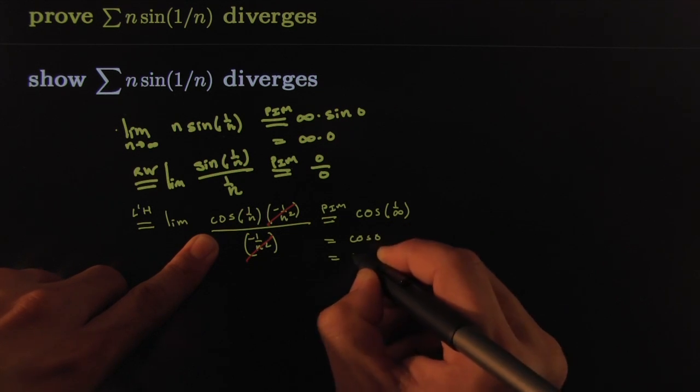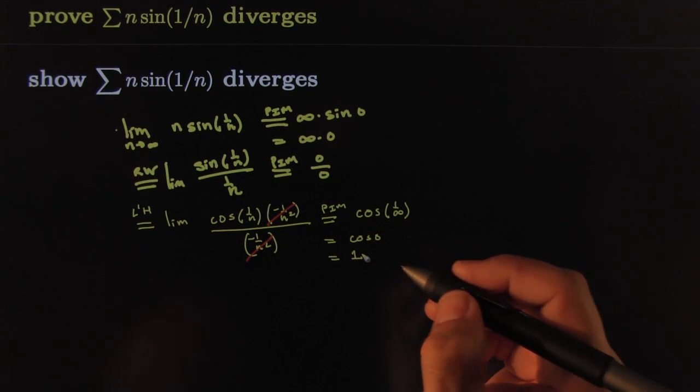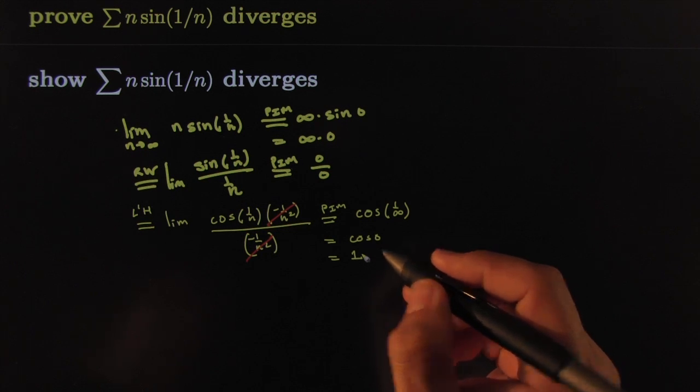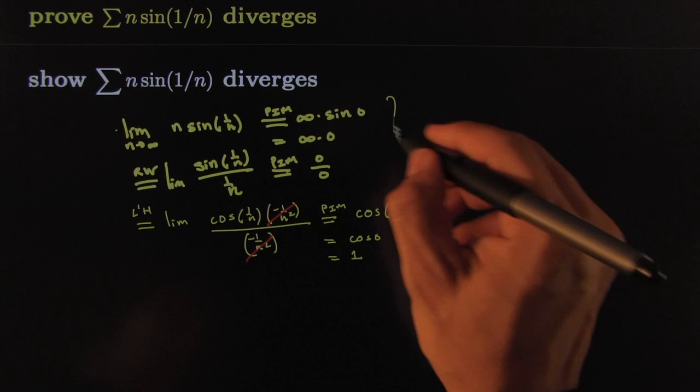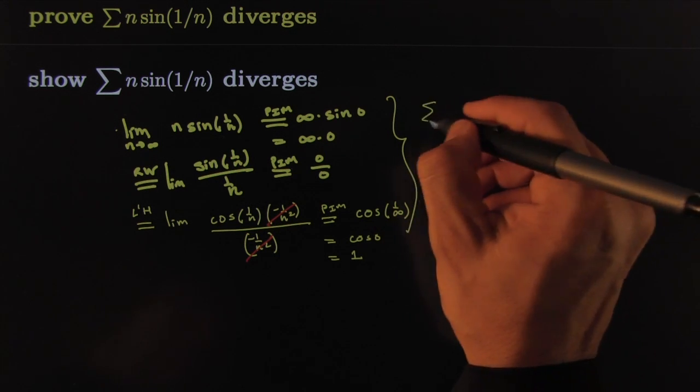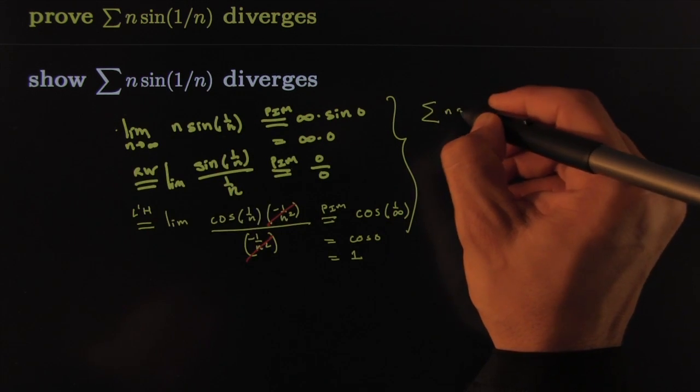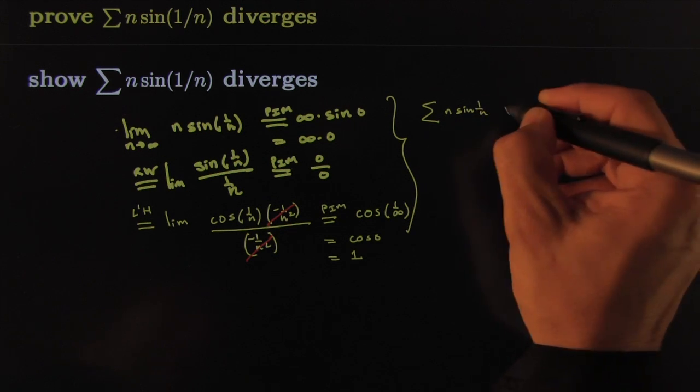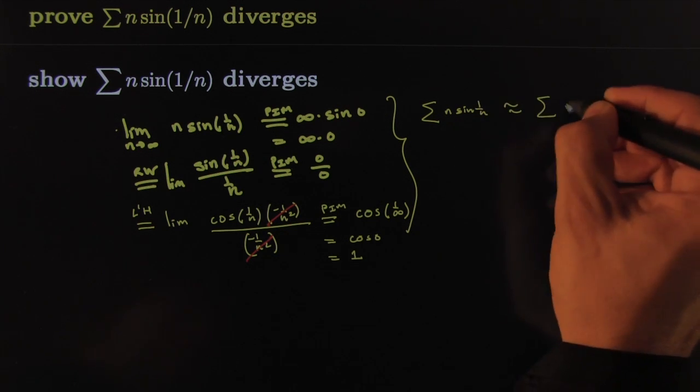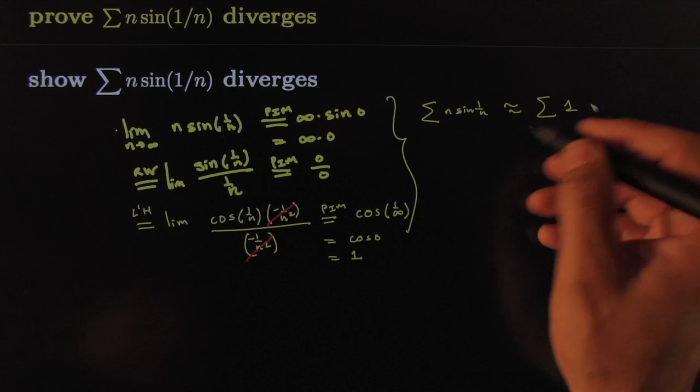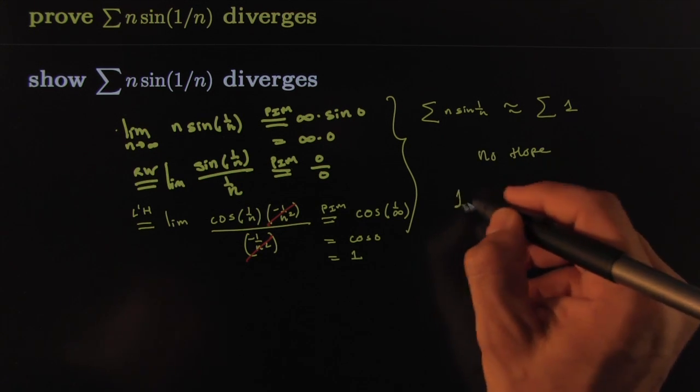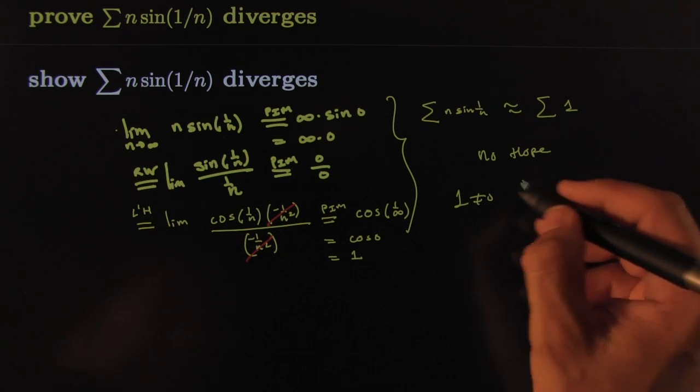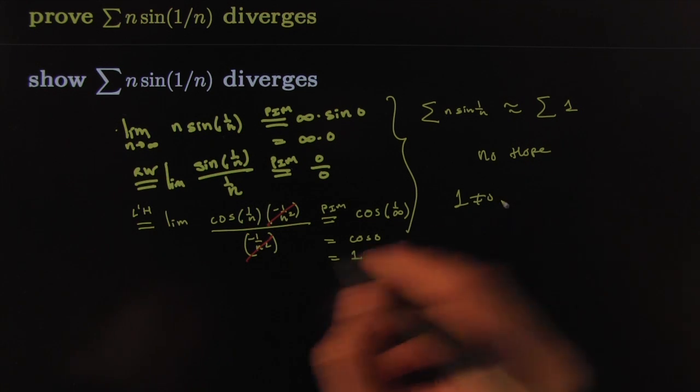of zero, which of course would be one. So this limit is one, and that means that the summation, our original summation of n sine of one over n, is a lot like adding a whole bunch of ones. Which of course, there's no hope—one is not equal to zero.